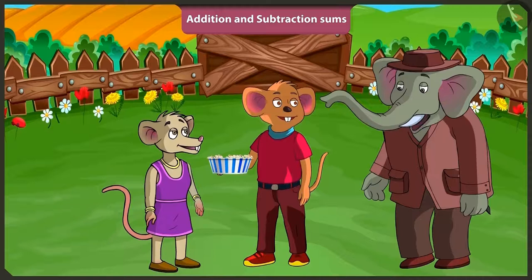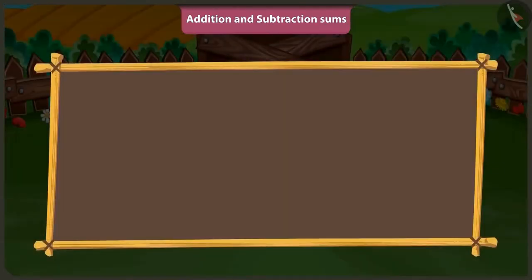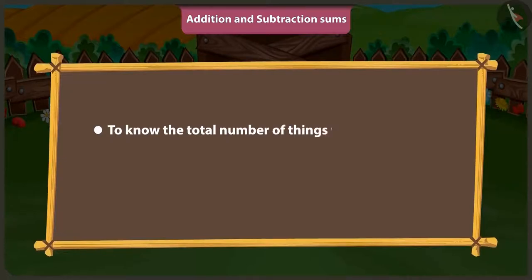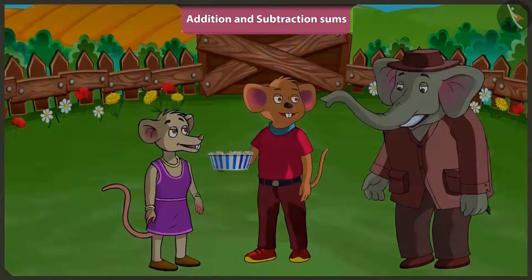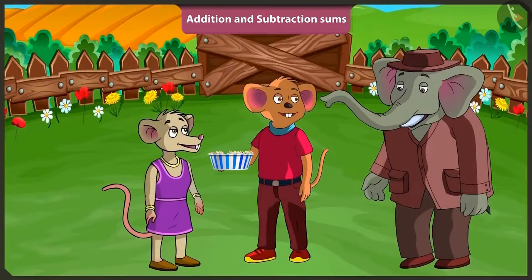Children, now you would have understood when to do addition and when to do subtraction. Yes Uncle — when we have to know the total number of things, we have to do addition. And when we have to know how many things are left from the total things, we have to do subtraction. Well done, children! Now you both play and I will go. Bye, Uncle.